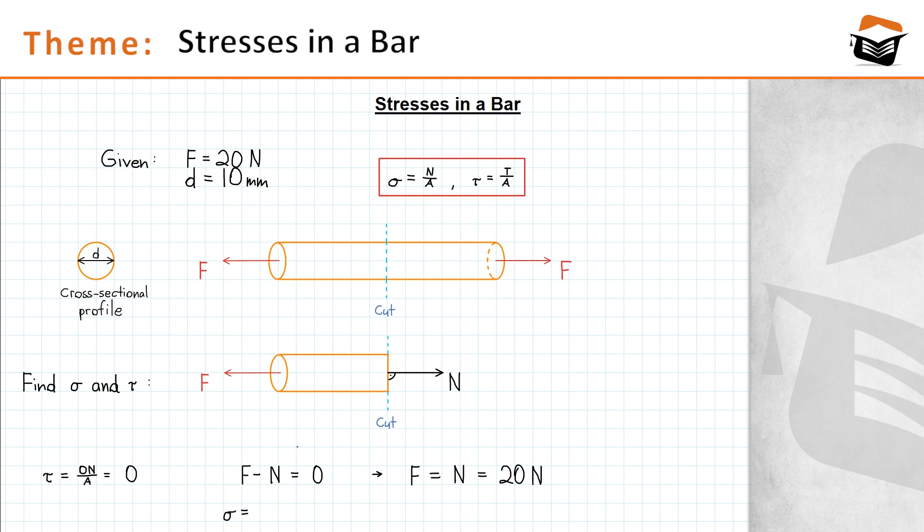We will use this formula: sigma is equal to the normal force divided by the area of the cross section. Now before we can continue calculating the normal stress, let's compute the cross sectional area of the bar. The area of a circle is generally calculated as